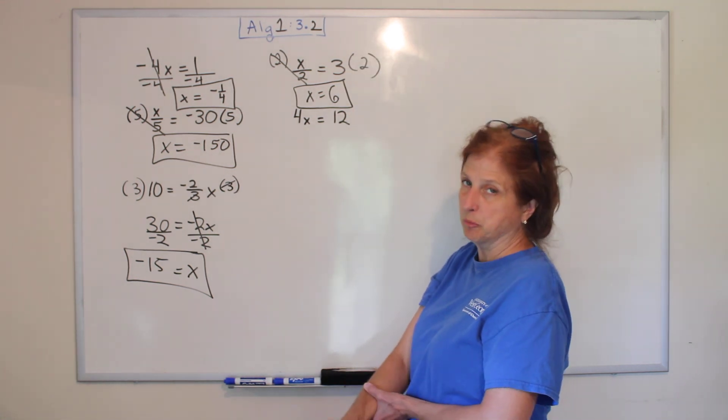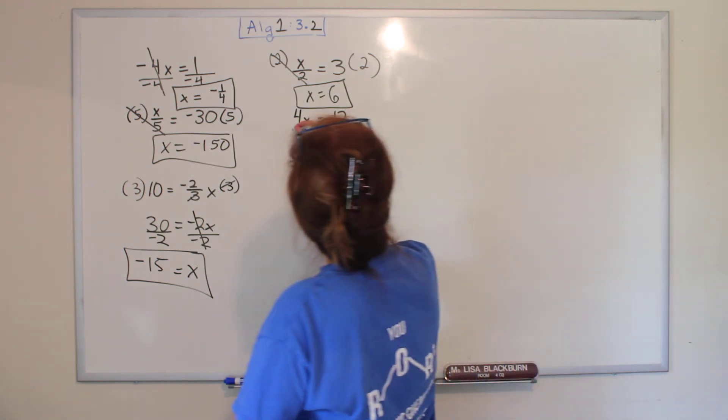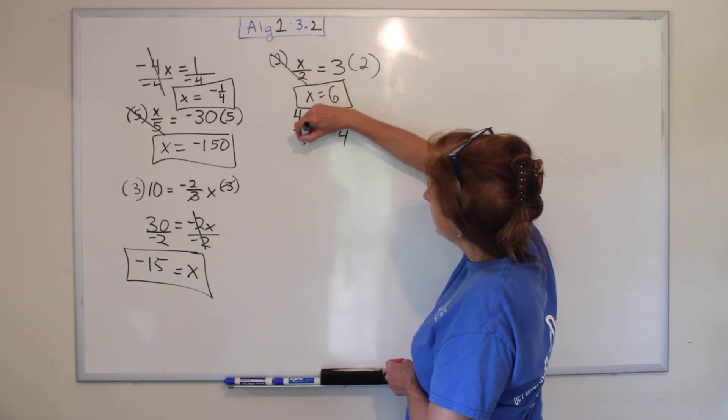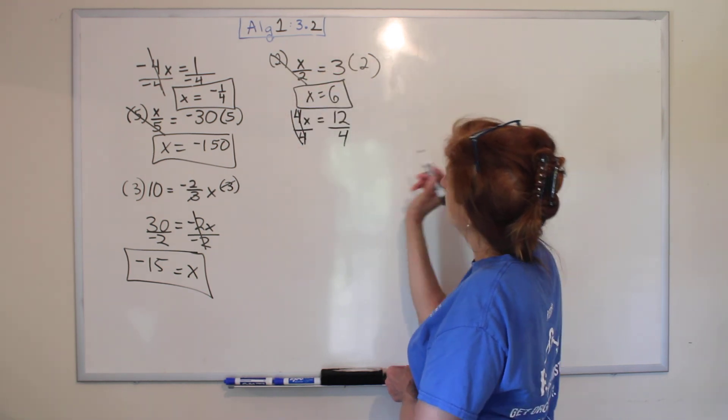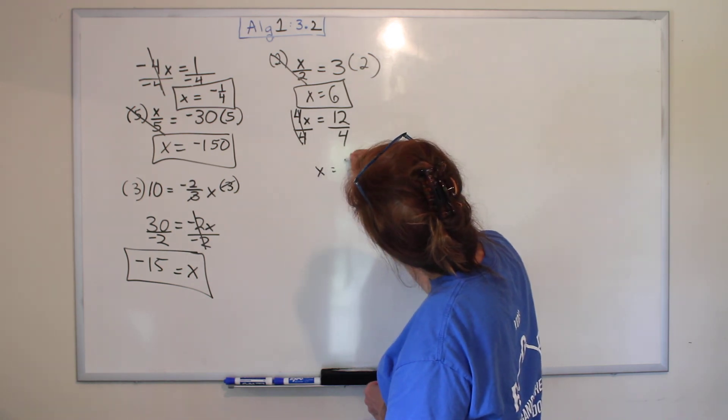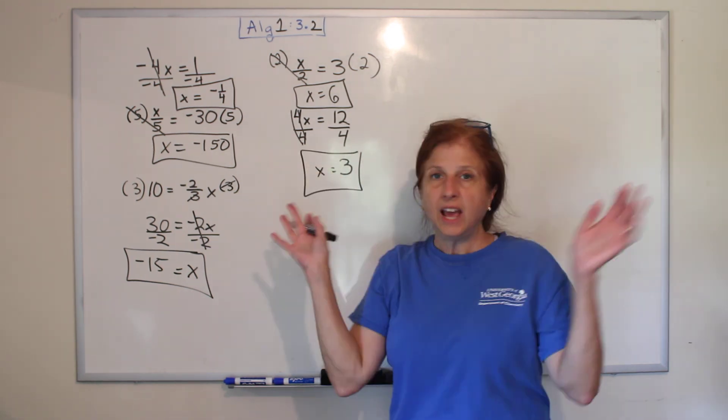Okay, let's try this one. Why is x not alone? It's being multiplied by four. What's the opposite? Divide by four. What I do to one side, I do to the other. These cancel out. That's kind of bad. 12 divided by four is 3. Yay!